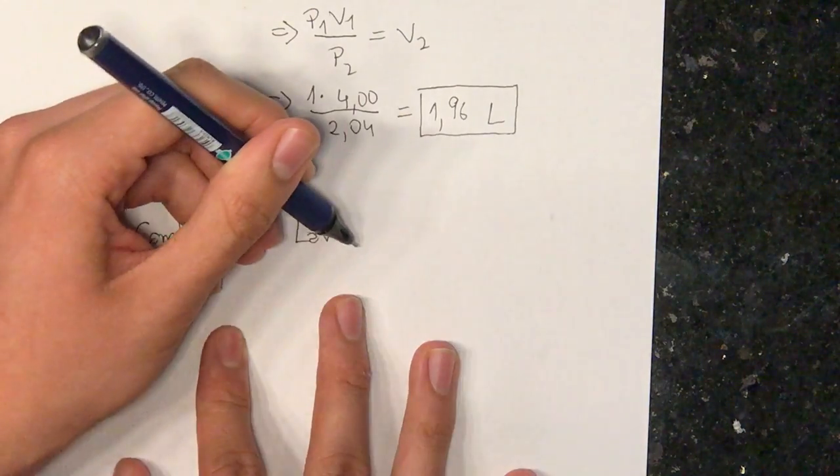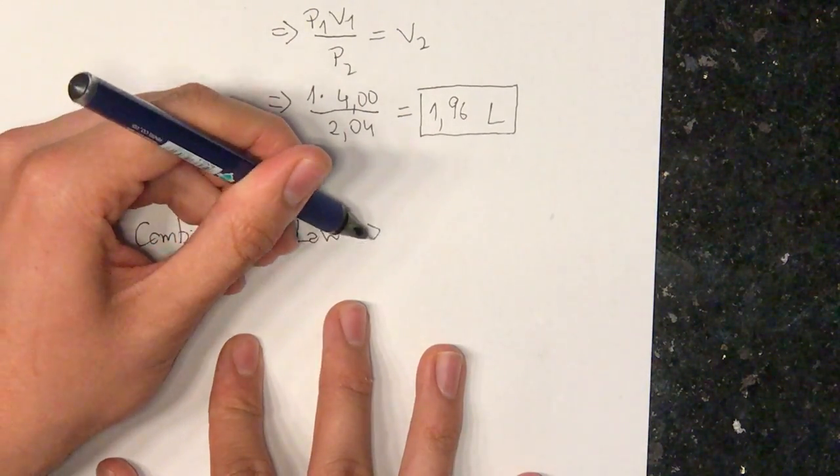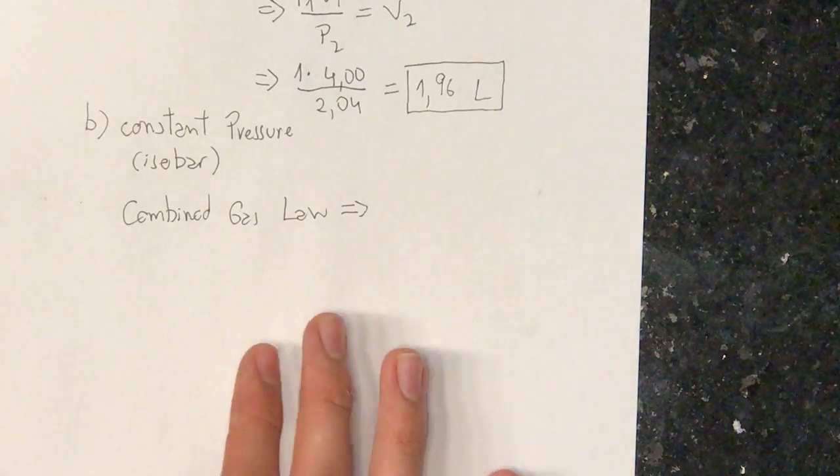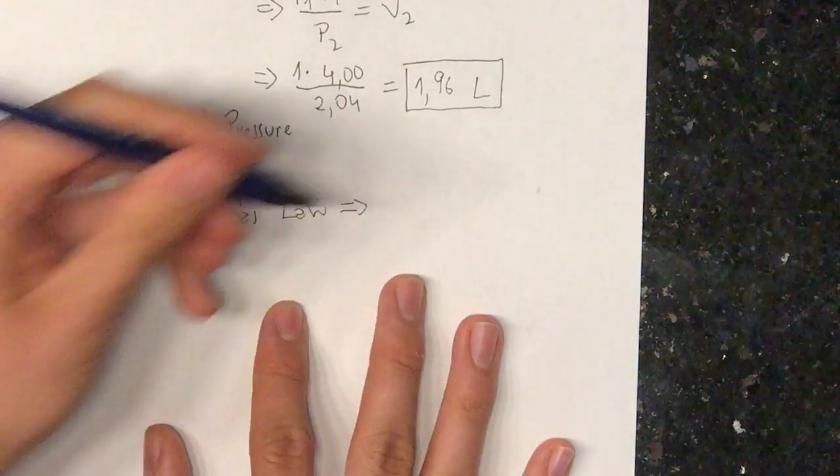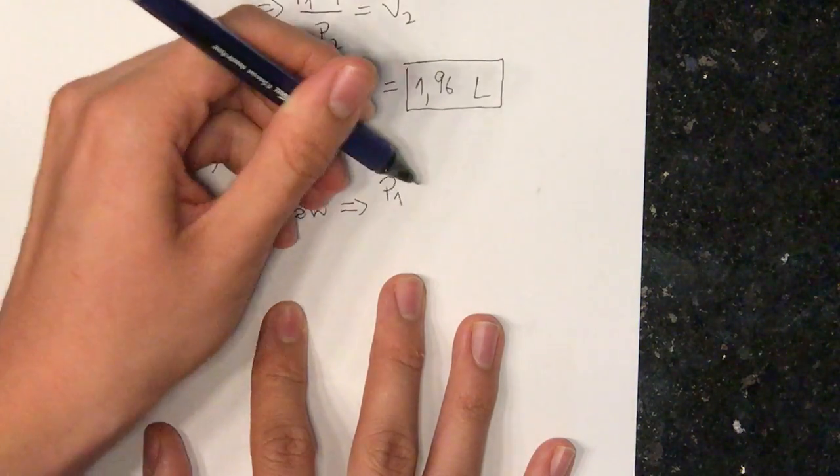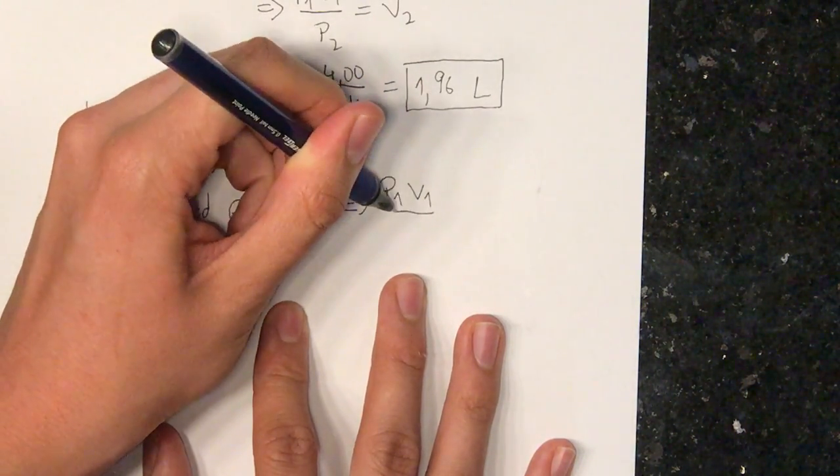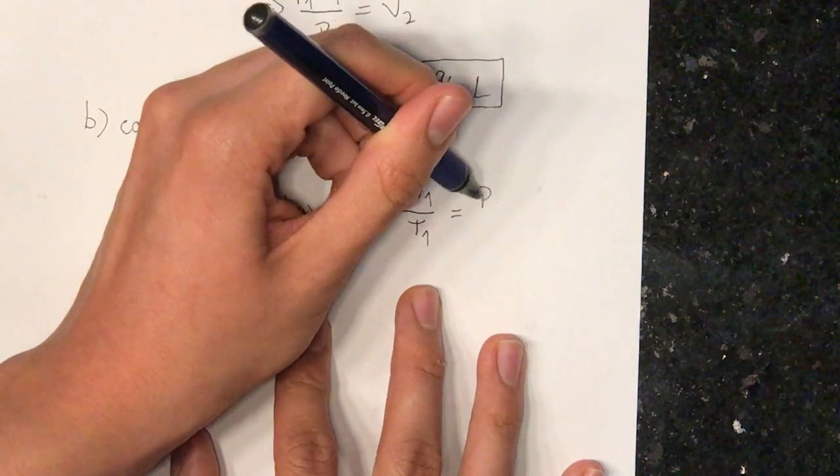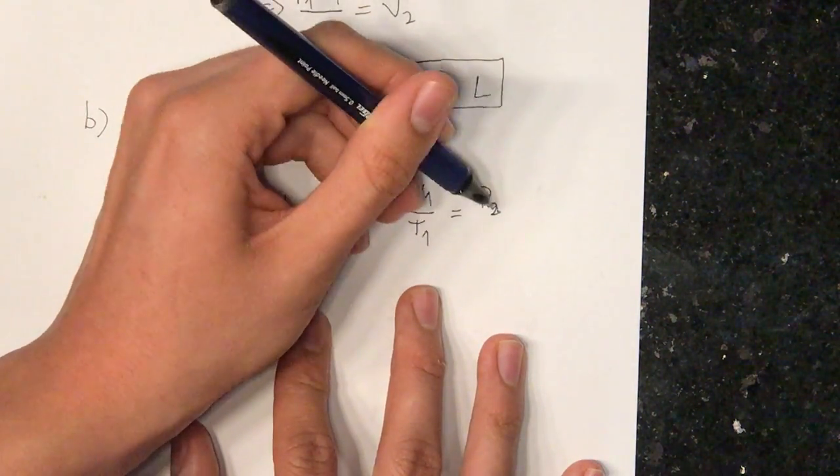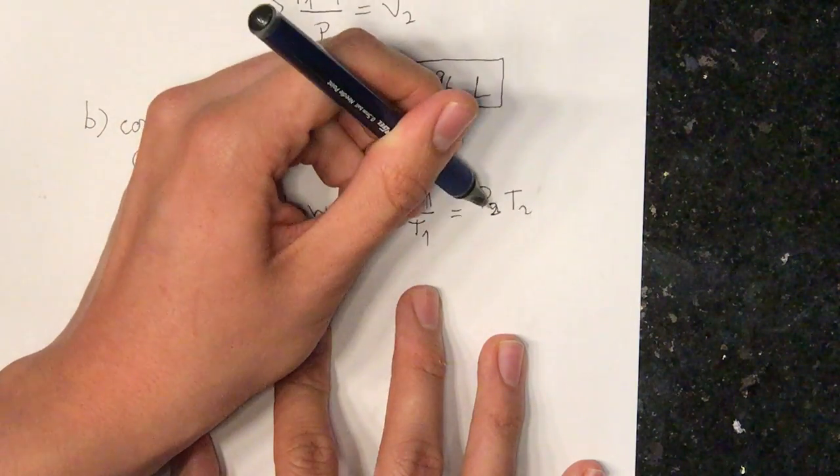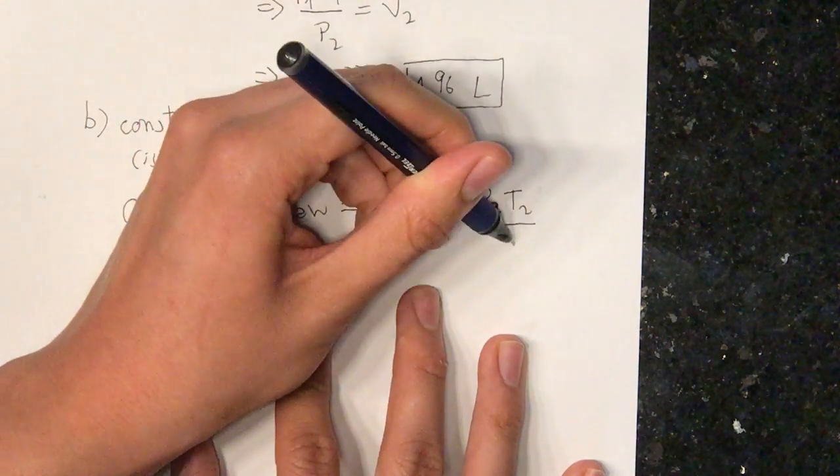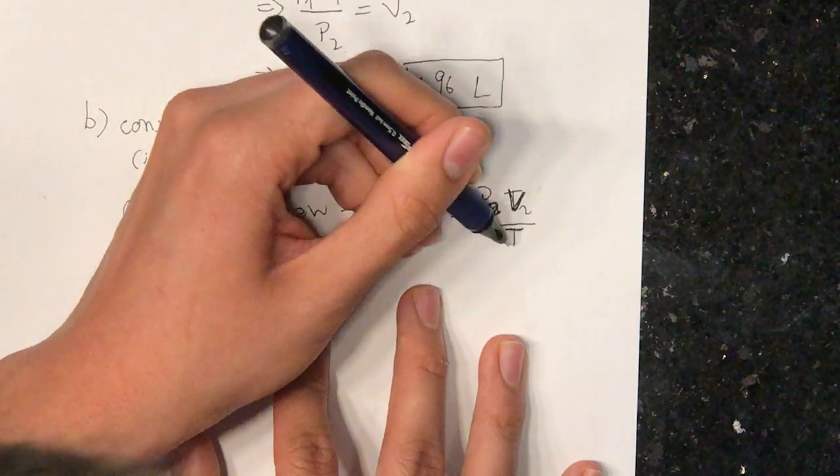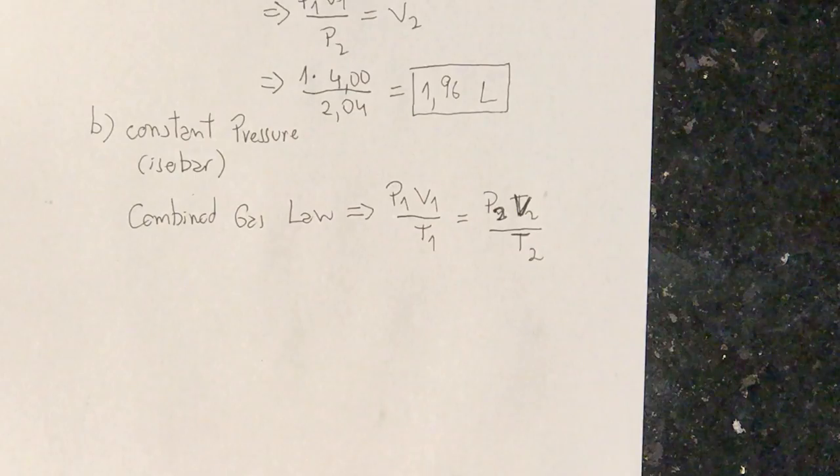This law states it's actually very similar to Boyle's law. It just includes the temperature in this case. We have P1 V1 divided by T1 is equal to, sorry, T2 divided by, sorry, V2, that is a V, divided by T2.